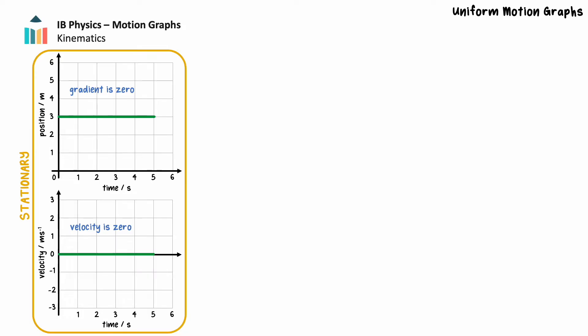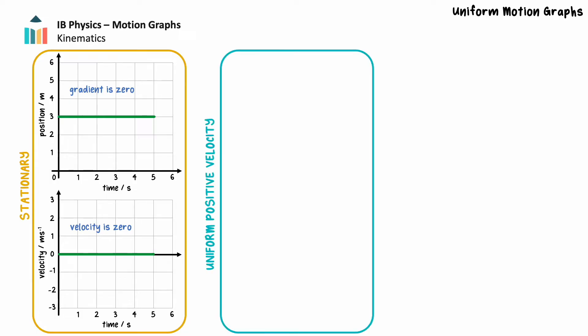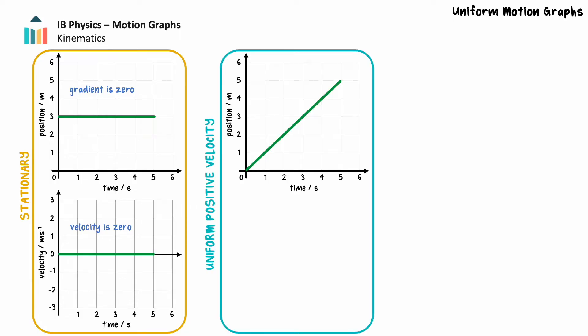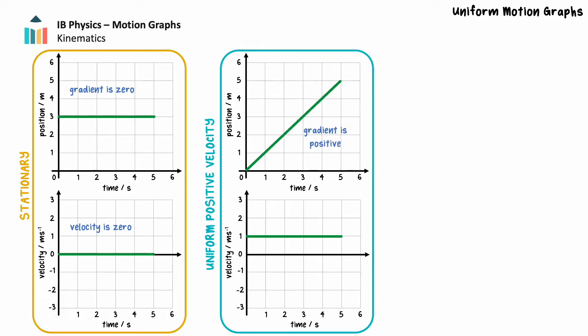Next, let's consider an object moving with uniform velocity in a positive direction. The position time graph will be a straight line with a constant positive gradient, which is equal to the object's velocity. The corresponding velocity time graph will have a gradient of 0, and the vertical axis value for the graph will be equal to the gradient of the position time graph. Because the velocity is in a positive direction, the graph will be located above the time axis.